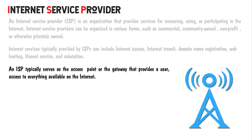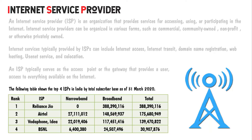An ISP typically serves as the access point or the gateway that provides a user access to everything available on the internet. The following table shows the top four ISPs in India by total subscriber base as of 31st March 2020. The type of internet service we choose will largely depend on which internet service providers serve our area along with the type of services they offer. Here are some common types of internet services.